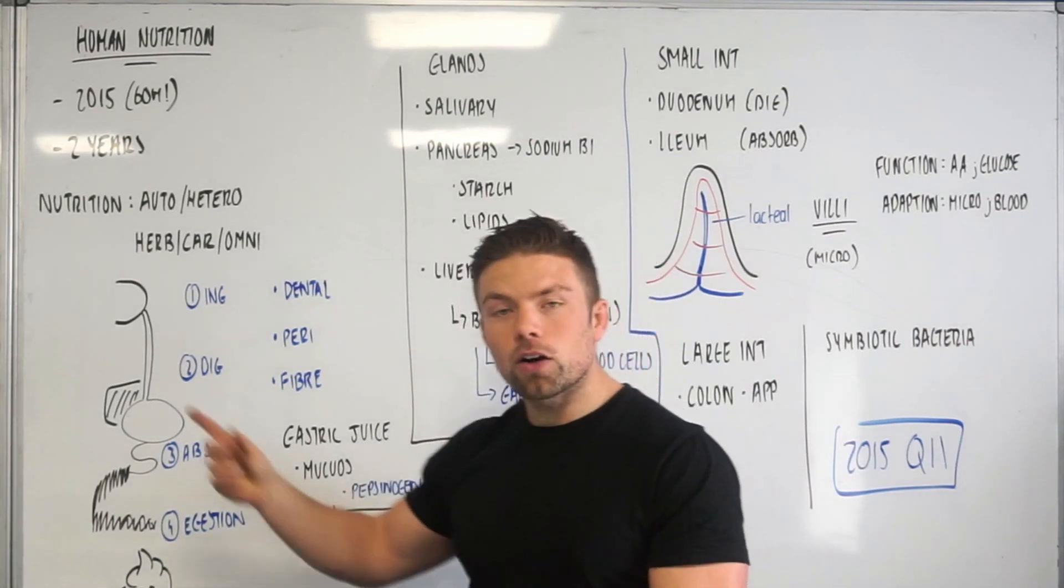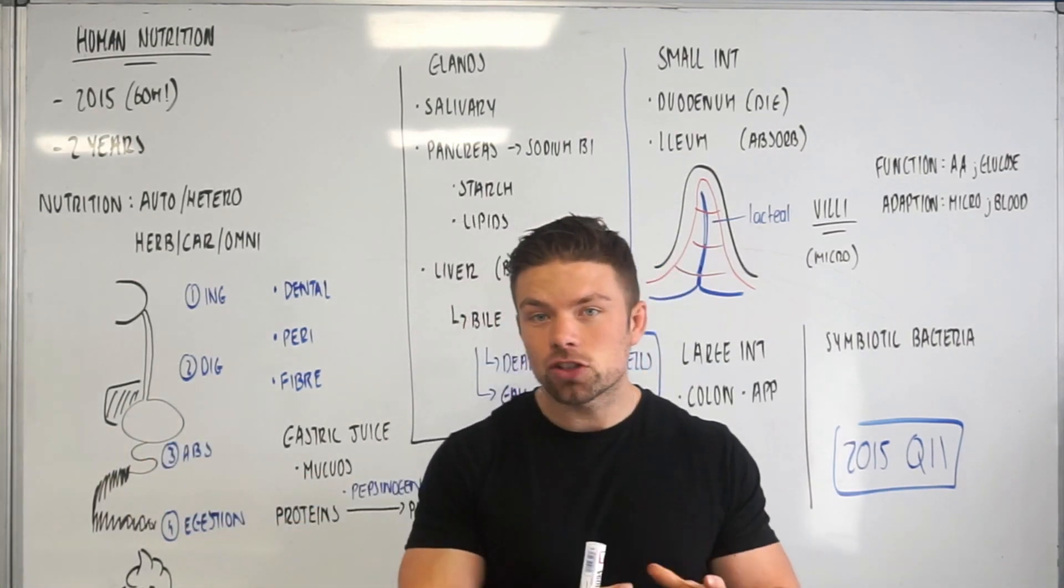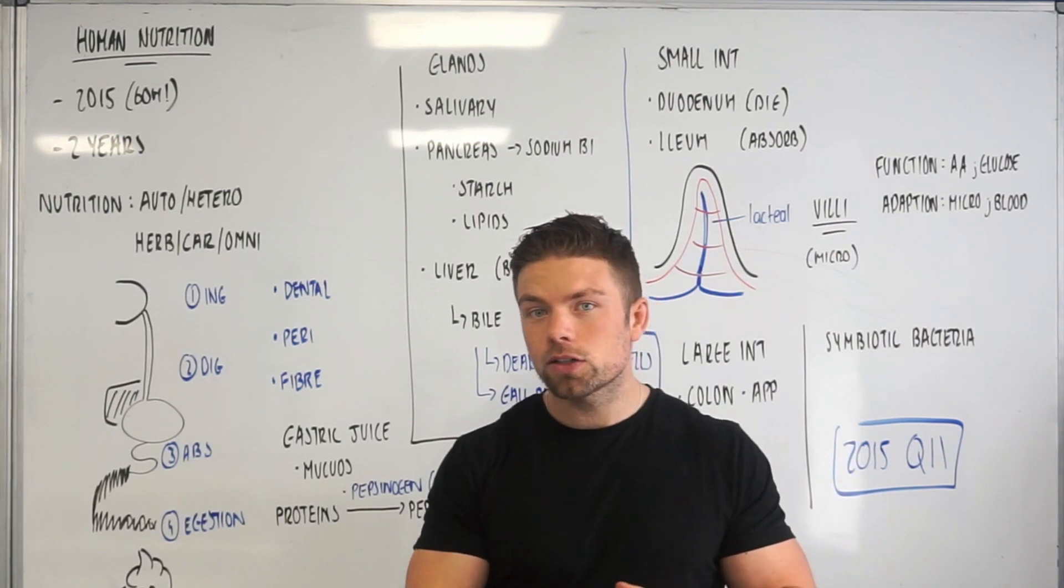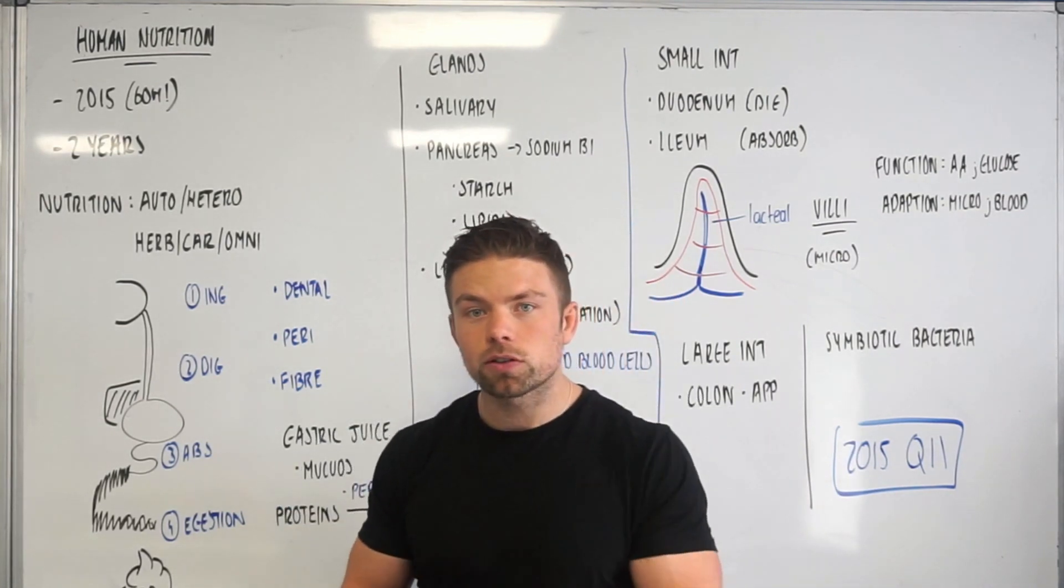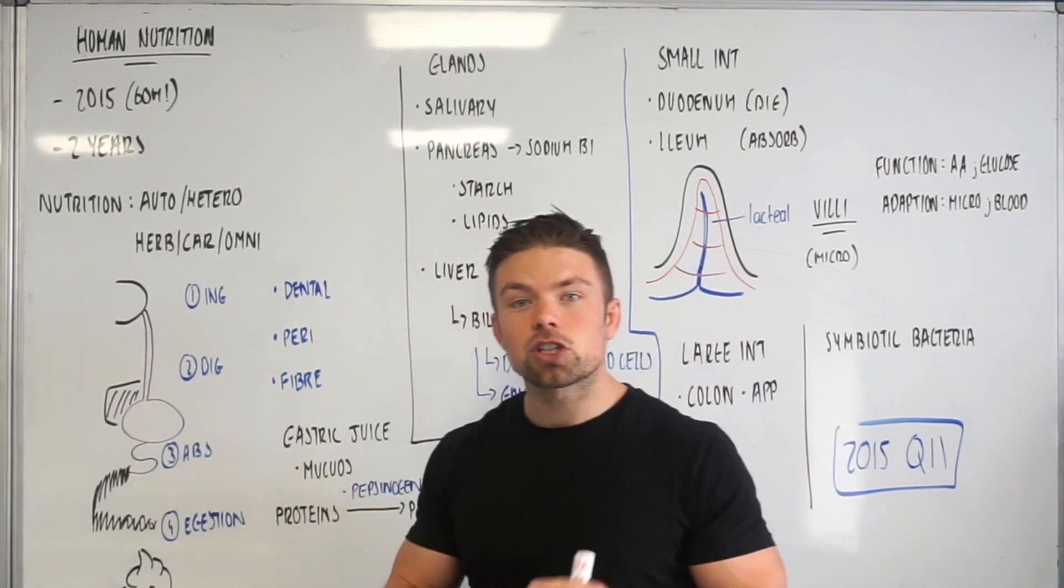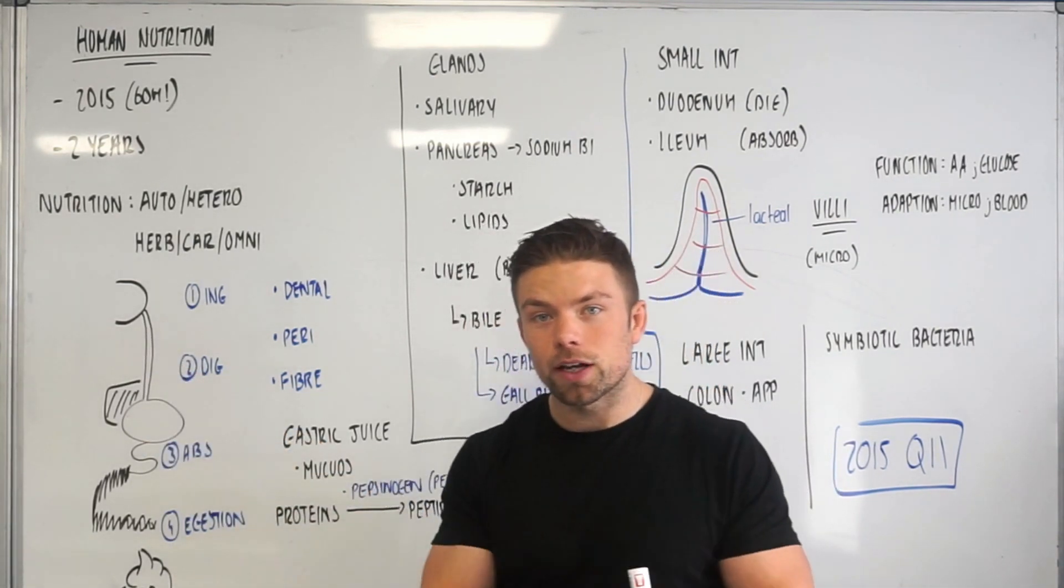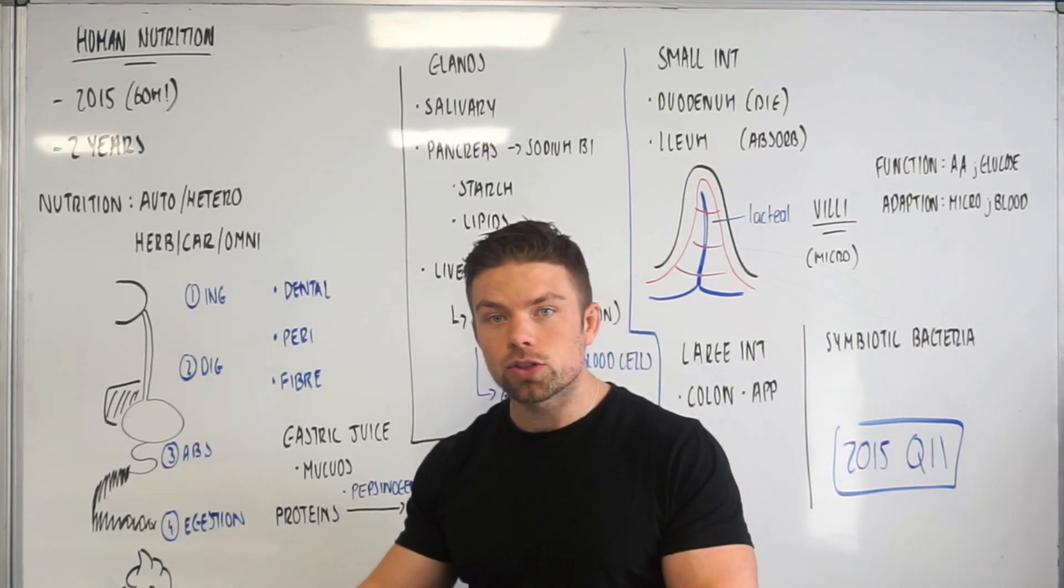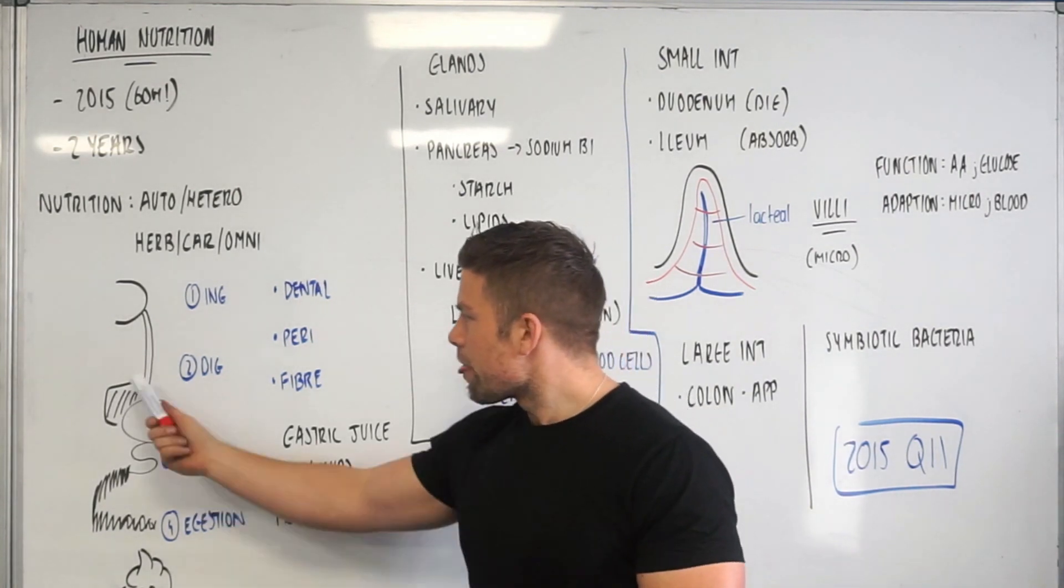Now in our mouth we know that there are enzymes working on it, so for example we've got amylase working on starch turning it into maltose. But we also have physical digestion in the form of our teeth. Now we need to know our dental formula, we need to know about our incisors, canines, premolars and molars - definitely just know that.